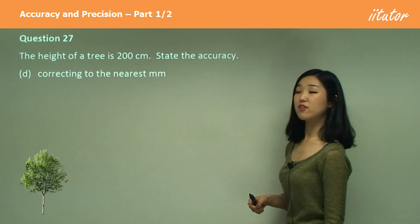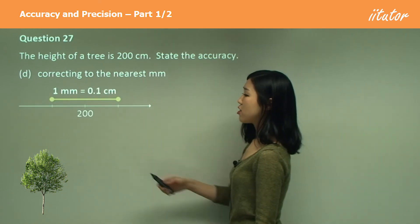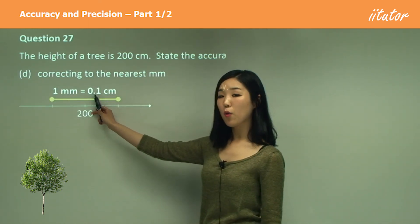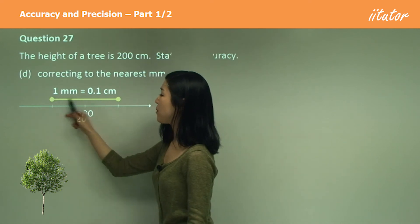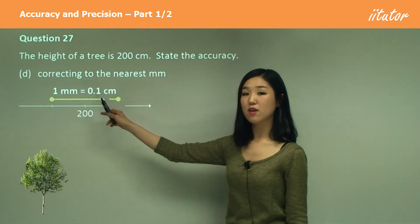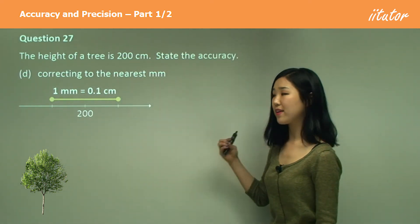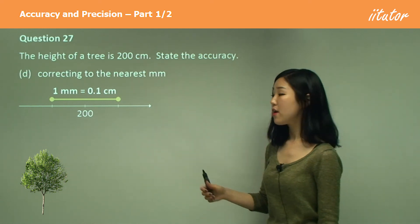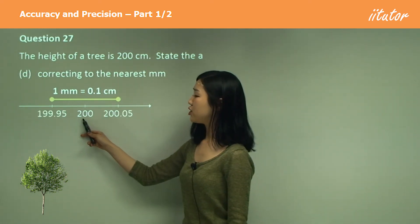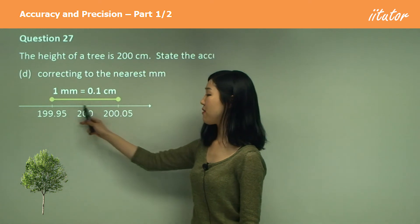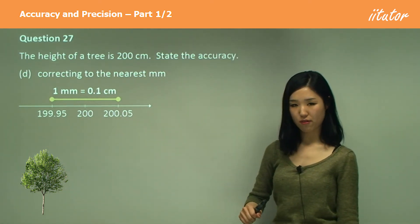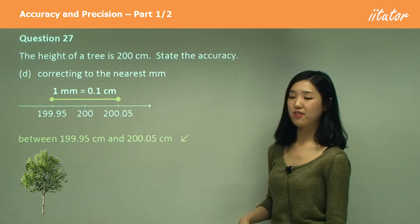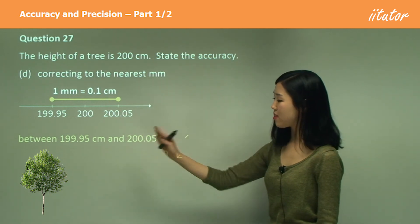Now d, to the nearest millimeter. Now you know that one millimeter is 0.1 centimeters, isn't it? So we want this gap to be 0.1 centimeters, which means half of 0.1 is 0.05. So that one should be 200 minus 0.05, 200 plus 0.05. So those are the values of accuracy. So it's between those two values.